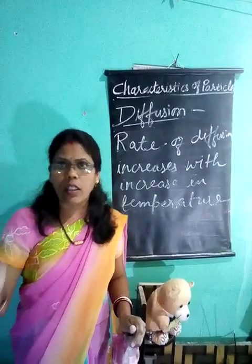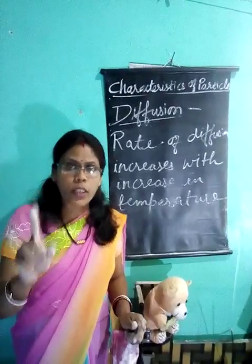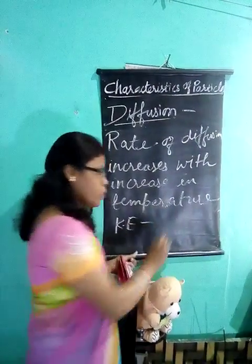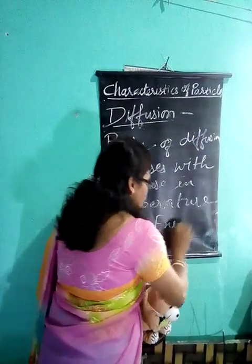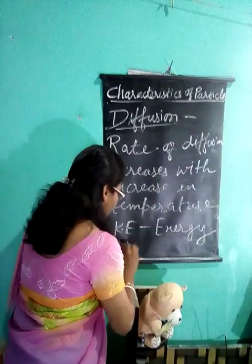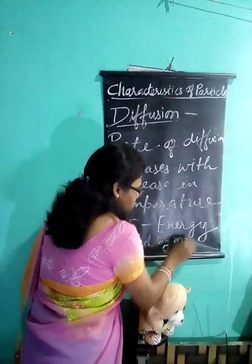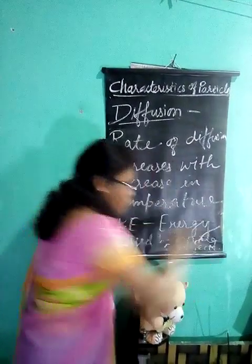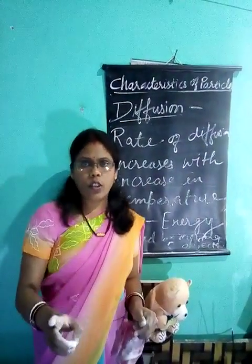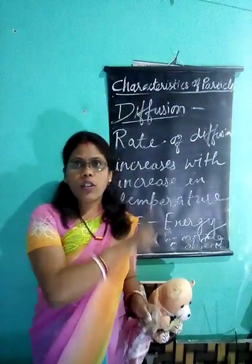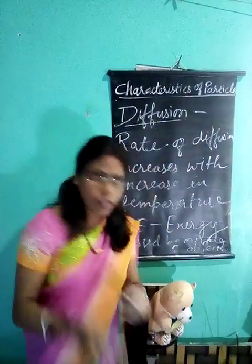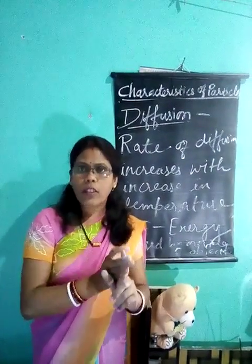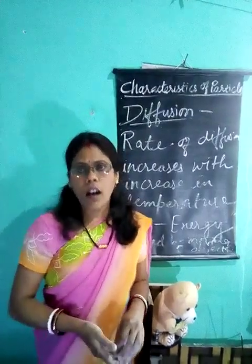From this you can see and understand that the particles of matter are moving continuously, which means they possess kinetic energy. Kinetic energy is the energy possessed by a moving object. Now the three characteristics we have completed are: particles have spaces between them, particles are very small in size, and particles are moving continuously. We will see more in the next class. Thank you.